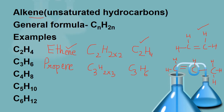This homologous series starts from C2. It does not have C1. Why does it not have C1? Because these are unsaturated hydrocarbons, and in unsaturated hydrocarbons there is a double or triple bond between carbon and carbon atom. So they require a minimum of two carbon atoms in a molecule. Therefore this homologous series starts from C2.